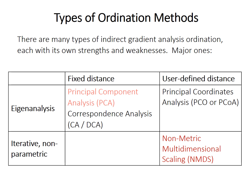In contrast, NMDS allows you to choose any distance measure that might be suited for your data, and it uses an iterative method for creating the ordination results. In that way, it doesn't make any assumptions of a linear relationship.